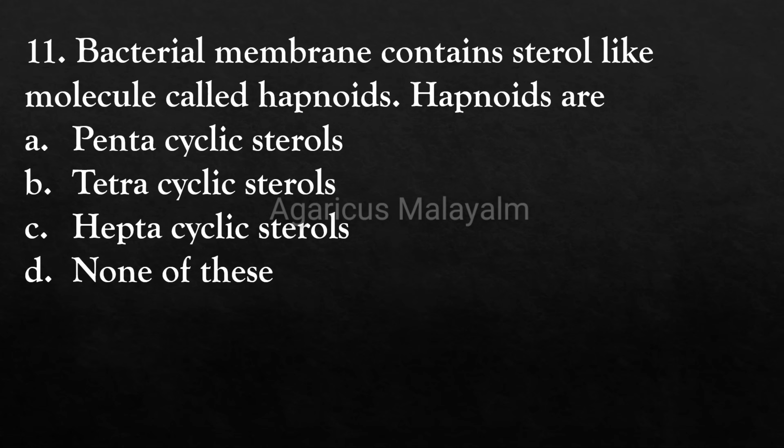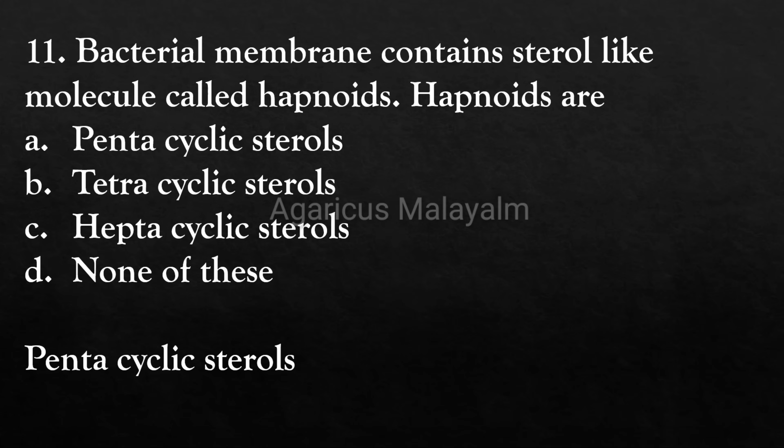Eleventh question (previous year question): The bacterial membrane contains a sterol-like molecule called hopanoids. Hopanoids are: Answer options: Option A - pentacyclic sterol, Option B - tetracyclic sterol, Option C - heptacyclic sterol, Option D - none of these. Correct answer: Option A - pentacyclic sterol.